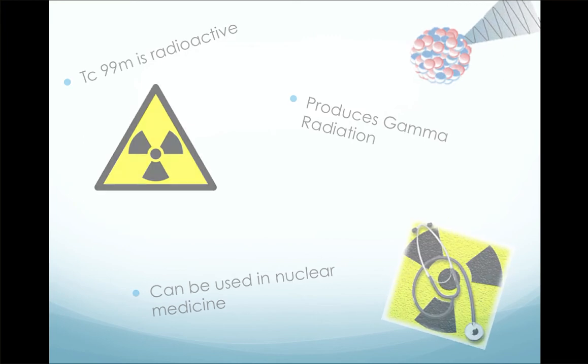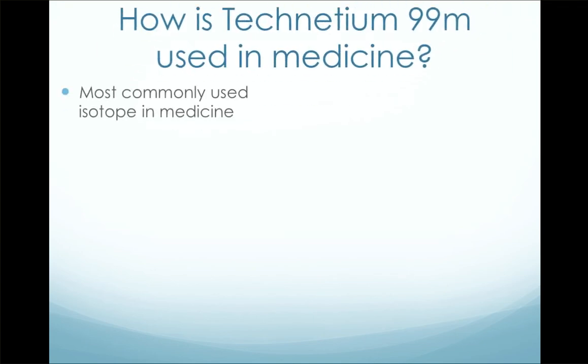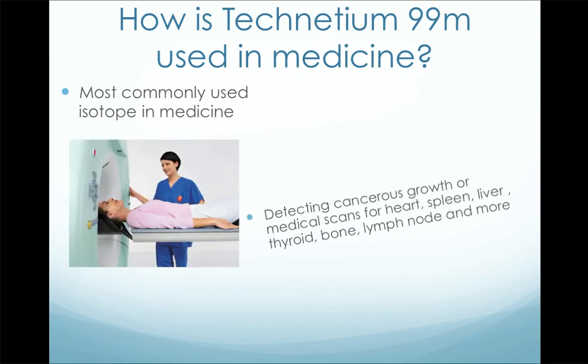So how is technetium-99m used in medicine? Did you know that it is the most commonly used isotope in nuclear medicine and is used to detect cancerous growth, or used for scans of the heart, spleen, liver, thyroid, bone, lymph node, and more?